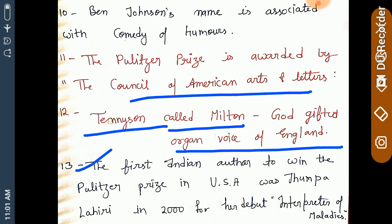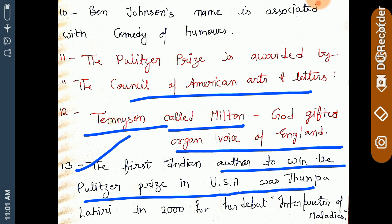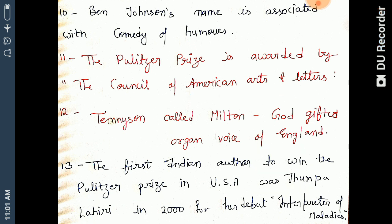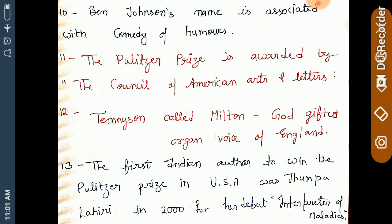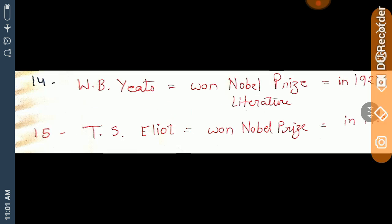The first Indian author to win the Pulitzer Prize in the USA was Jhumpa Lahiri in 2000. Her book Interpreter of Maladies won the Pulitzer Prize in 2000.